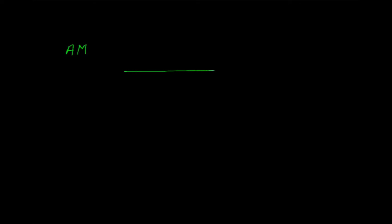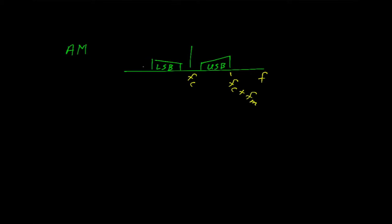Let's start by looking at the spectrum of AM. In the frequency domain there's the carrier, a wedge of frequencies on one side of the carrier, and a wedge of frequencies on the other side of the carrier. We would call these the upper sideband and the lower sideband. At the edge of the upper sideband we have the frequency of the carrier plus the frequency of the modulating signal. Likewise, here we have the frequency of the carrier minus the frequency of the modulating signal. The bandwidth for an AM transmission is, therefore, two times the frequency of the modulating signal.